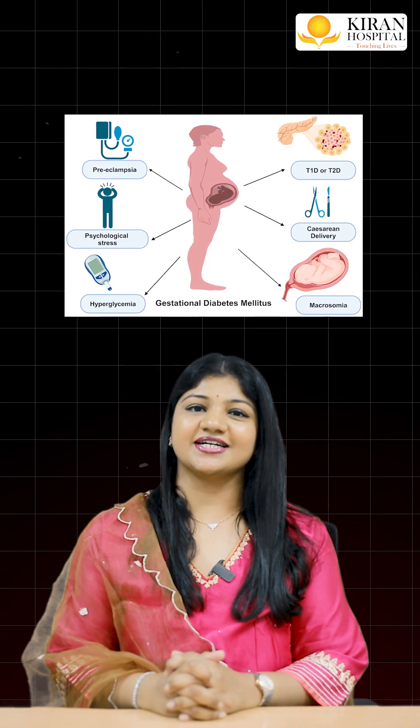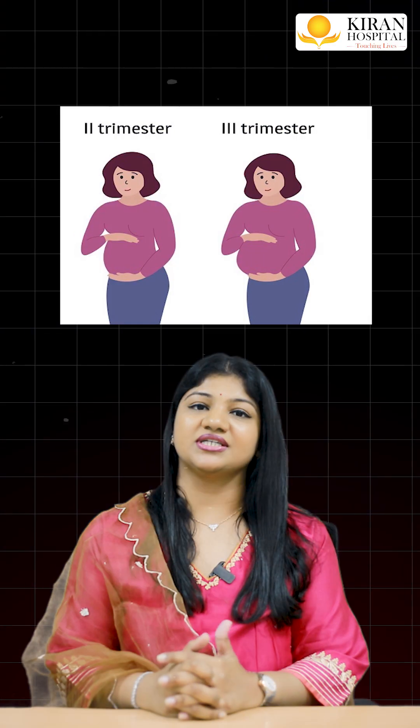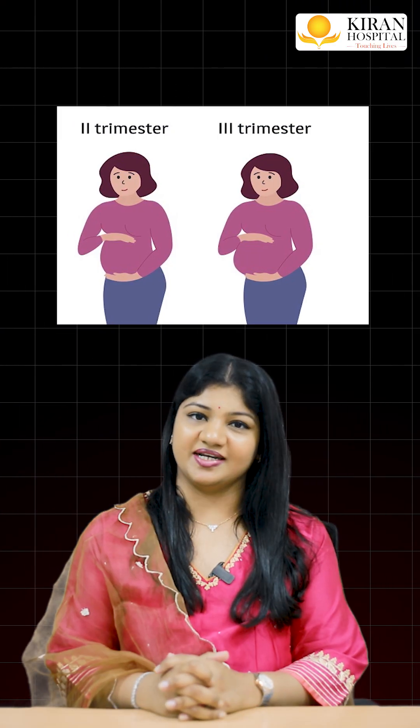Gestational diabetes mellitus is a condition in which a pregnant woman has increased sugar levels, mostly in her second or third trimester of pregnancy, who is not a known case of diabetes.